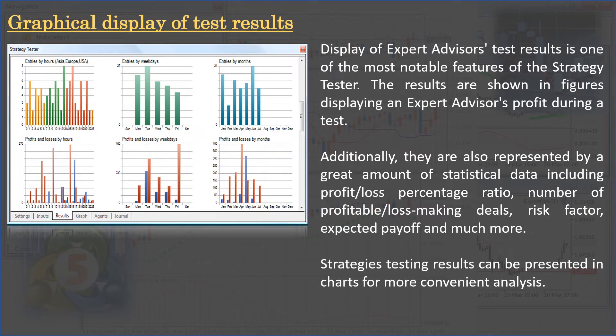Graphical display of expert advisor test results is one of the most notable features of the Strategy Tester. Results are shown in figures displaying an expert advisor's profit during a test. Additionally, they are represented by a large amount of statistical data including profit/loss percentage ratio, number of profitable/loss-making deals, risk factor, expected payoff, and much more. Strategy testing results can also be presented in charts for more convenient analysis.